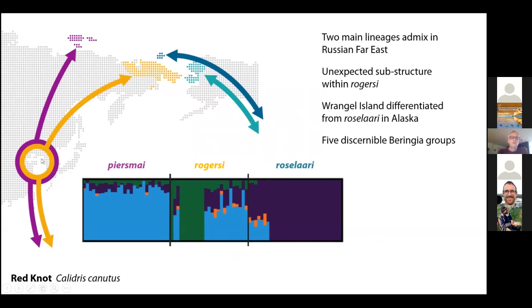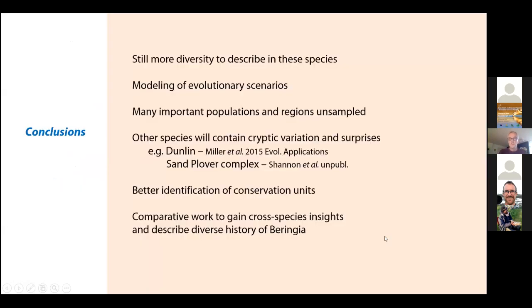Additionally, the breeding populations in Wrangel Island and Alaska, which are considered rosaelaarti, are genetically distinguishable, meaning we have two subpopulations within rosaelaarti. Both those populations fly east to the Americas, whereas these two populations mix on our flyway, but there's an interesting relationship between rogersi and Wrangel Island that needs to be investigated.